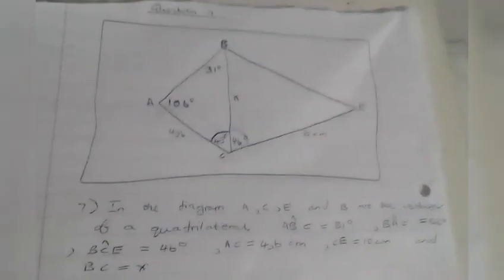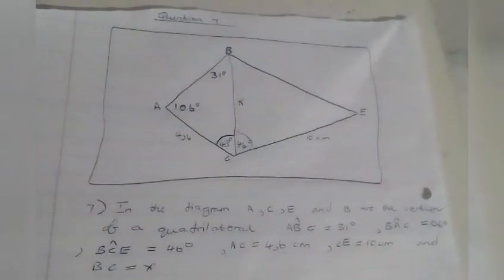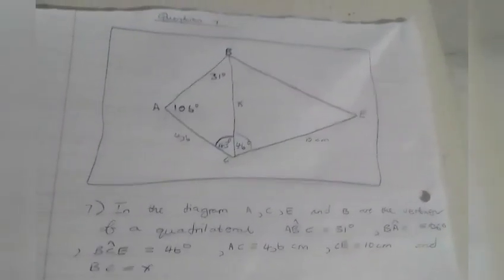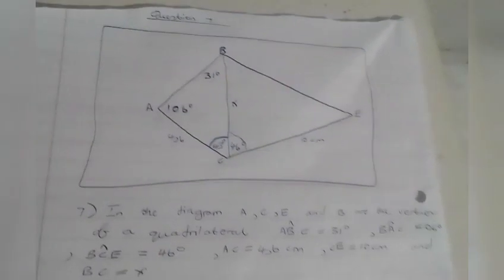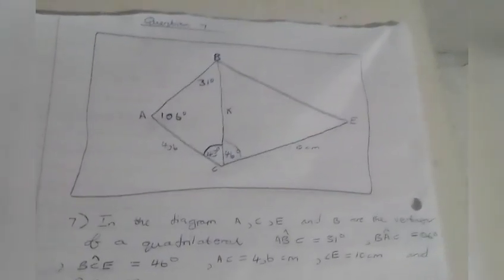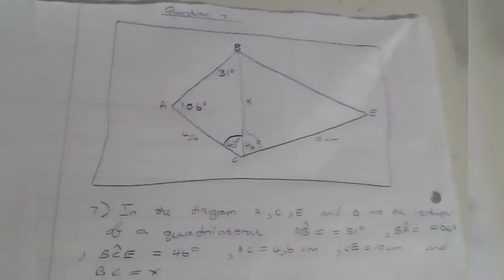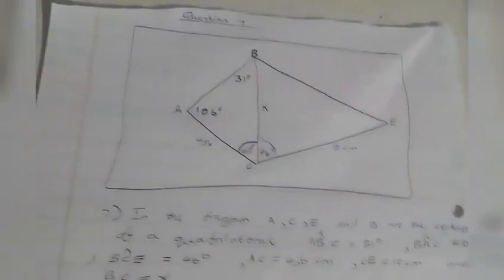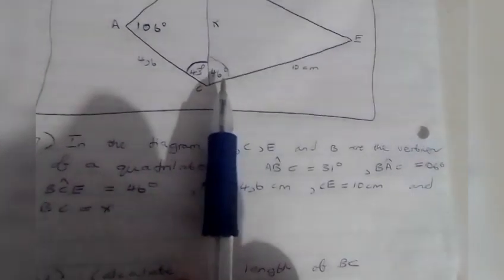Good evening, it's Box of Mathematics Academy. I wanted to recap how to get answers based on a quadrilateral shape. In the diagram, A, C, E, and B are the vertices of the quadrilateral. Angle B is 106 degrees, and angle A is 36 degrees, and angle C is 46 degrees.